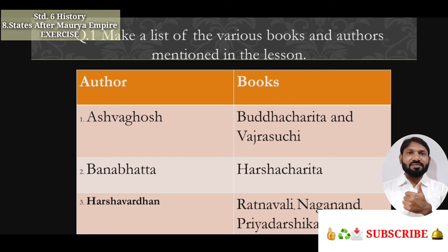Next question: Make a list of various books and authors mentioned in the lesson. Author Ashvaghosha — books: Buddhacharita and Vajrasuchi. Author Banabhatta — book: Harshacharita. Author Harshavardhana — books: Ratnavali, Nagananda, and Priyadarshika.